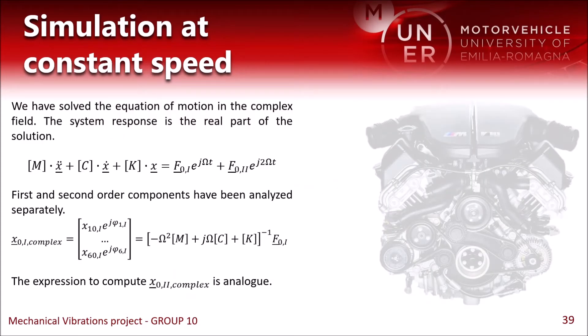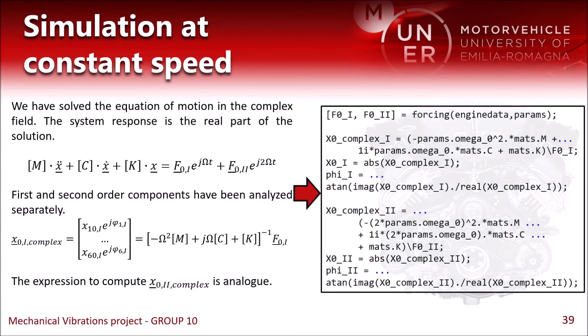To solve the equation of motion for a constant engine speed, which is the case of harmonic forcing, we use the forcing function that we have seen earlier, so we have a complex force, a complex solution vector, and then we simply take the real part of the solution.